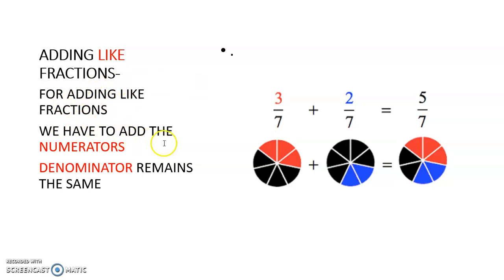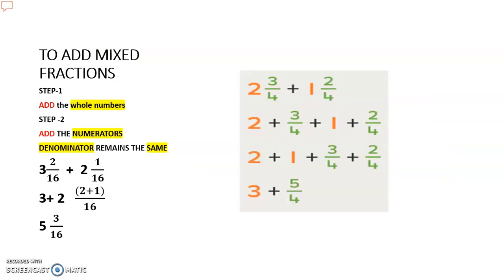So what are the steps involved in adding like fractions? For adding like fractions, we add the numerators and the denominator remains the same.